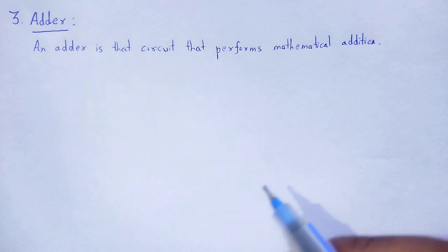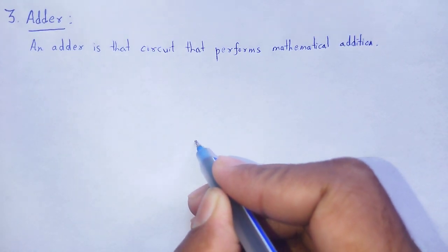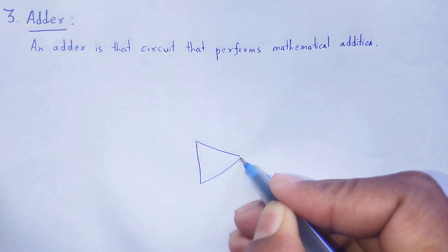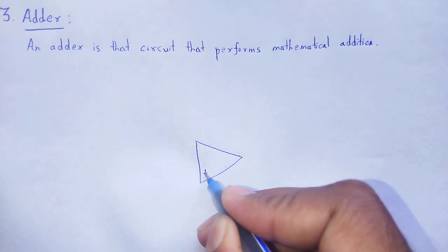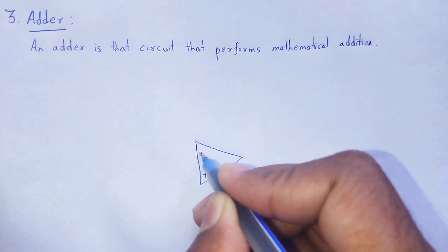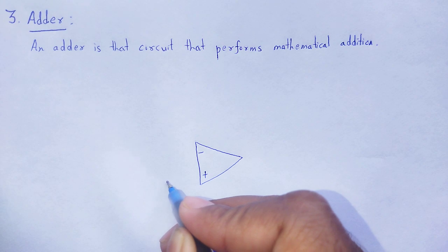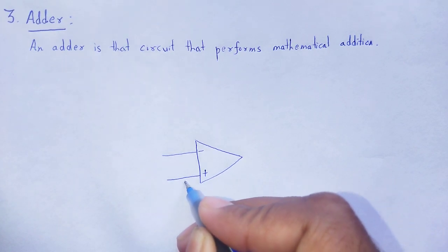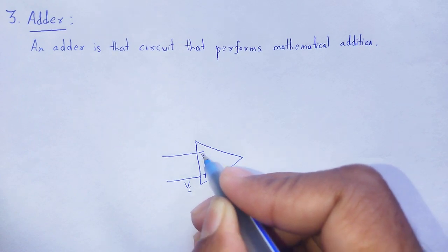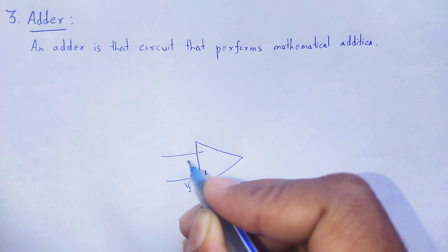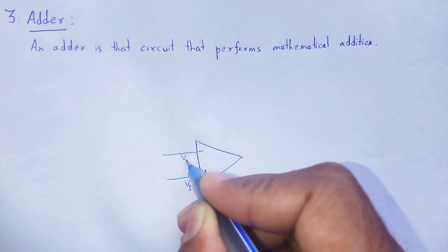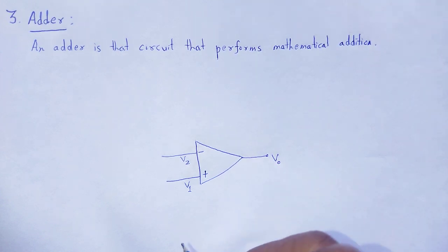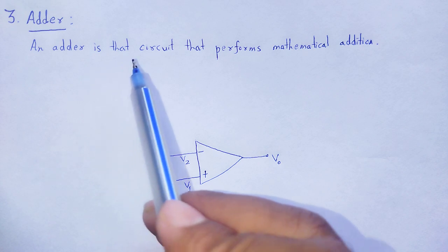We can create an adder circuit by using an op-amp. As we know, an op-amp has two terminals: one is the non-inverting terminal and another one is the inverting terminal. The potential at the non-inverting terminal, let V1, and the inverting terminal has potential let V2. At the output, we obtain V-out.